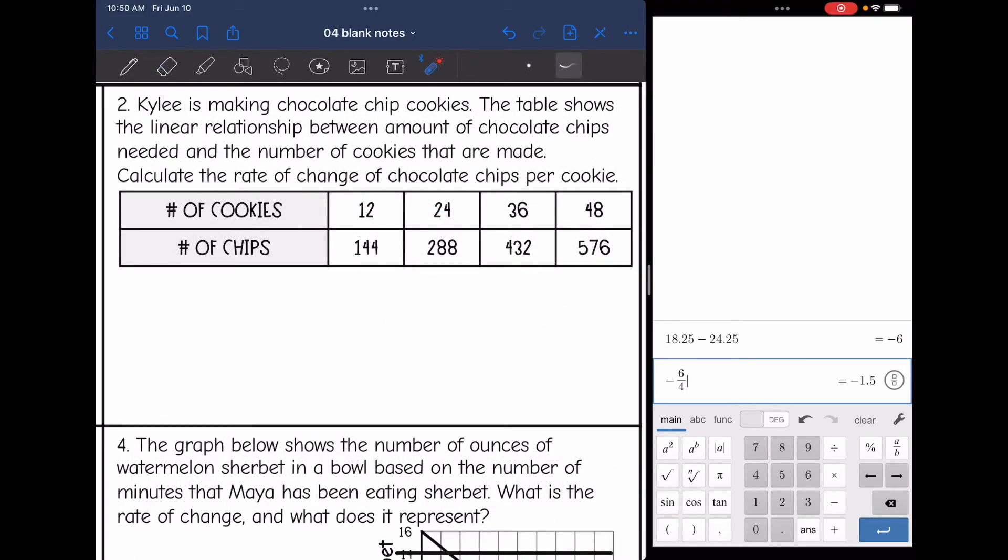Let's look at number two. It says Kylie is making chocolate chip cookies. The table shows the linear relationship between amount of chocolate chips needed and the number of cookies that are made. Calculate the rate of change of chocolate chips per cookie. So the independent here would be the number of cookies because the number of chips that they need will depend on the number of cookies that they make. So there's our x and y variable. And then I can choose any two points to plug into slope formula since it says find the rate of change.